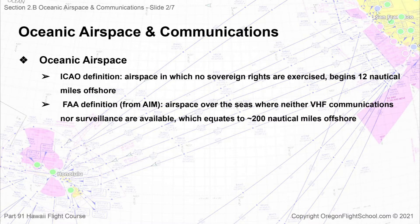ICAO describes oceanic airspace as airspace in which no sovereign rights are exercised, and it generally lies beyond the borders of territorial waters, which are accepted by many, but not all countries, as 12 nautical miles off the coast. So under the ICAO definition, oceanic airspace normally begins about 12 nautical miles from the land borders of states along the ocean. Oceanic airspace is subject to ICAO procedures and regulations, and both private flights and airline flights are expected to abide by these regulations.